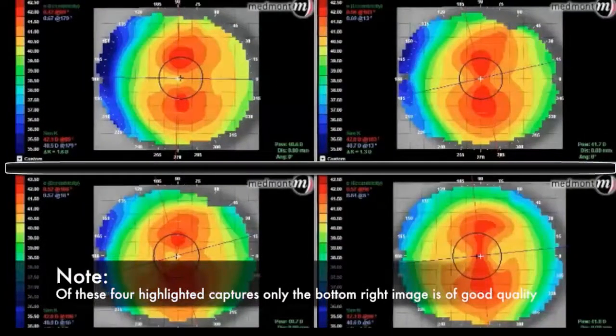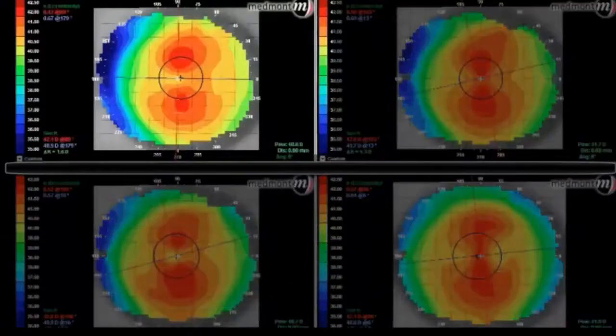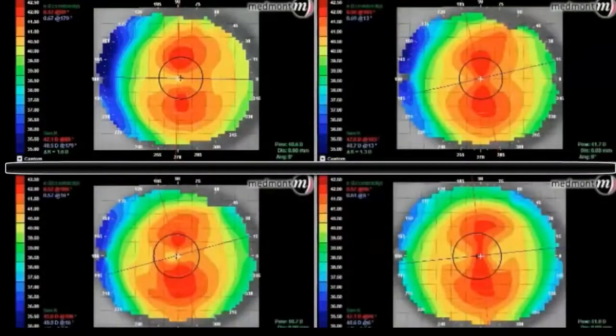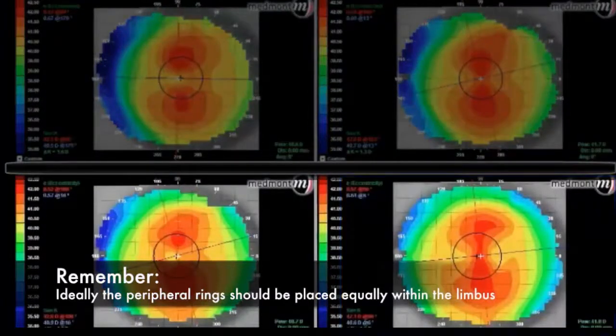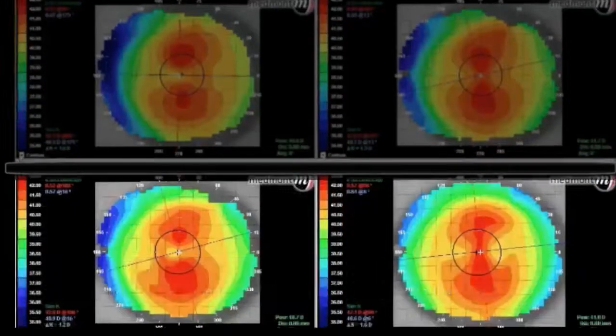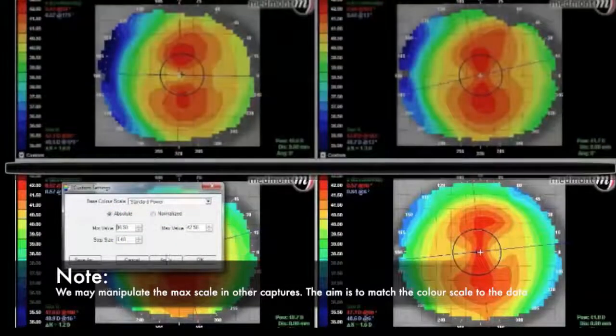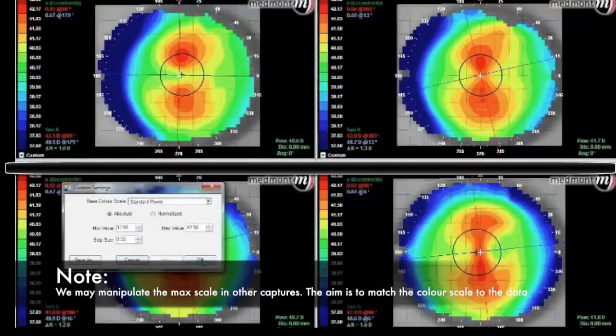If we look at the top left map, we see the blue color is on the nasal side of the left eye. This means that the peripheral rings are not centralized within the limbus. Whereas if we look at the bottom right image, we see that the blue color is spread evenly between the nasal and temporal side. This is ideal. For these maps, we click custom and manipulate the minimum scale to better show the optics of this axial power map.